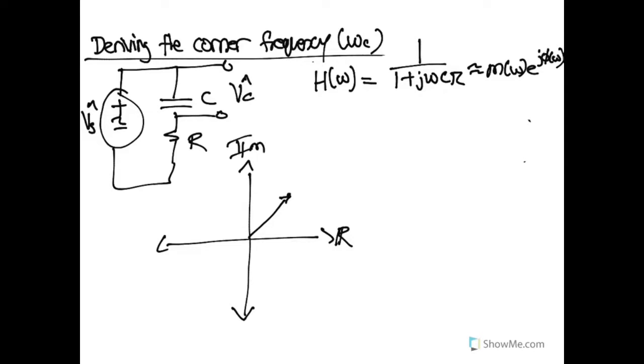then we could place it in the complex plane here at 1, ωCR, because this is the real component of that value, and this is the imaginary component of that value. And remember, to put things in a polar form, we need to know what this length is right here, and then what this angle is.